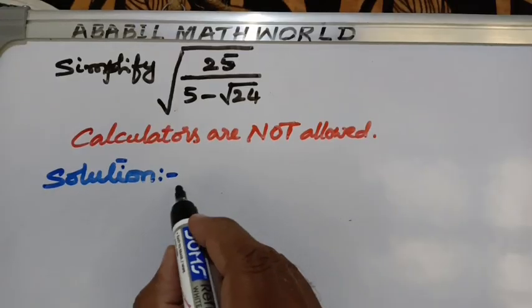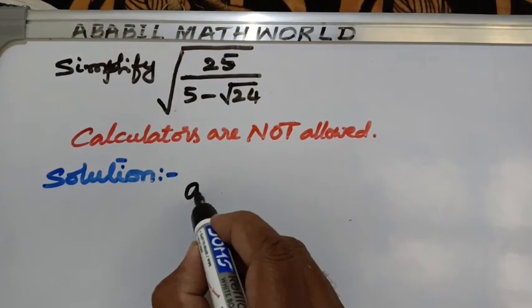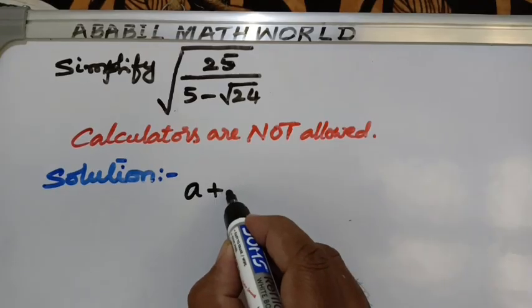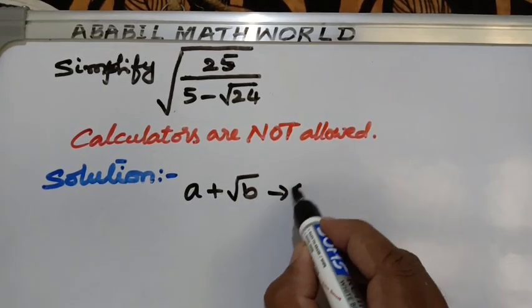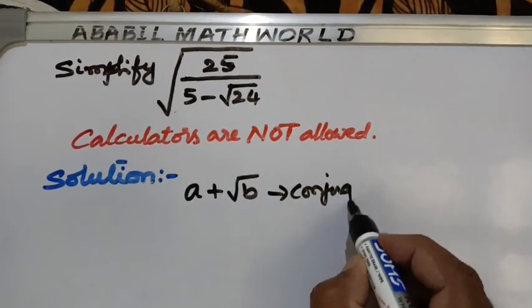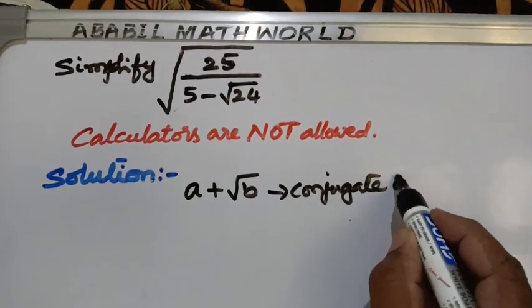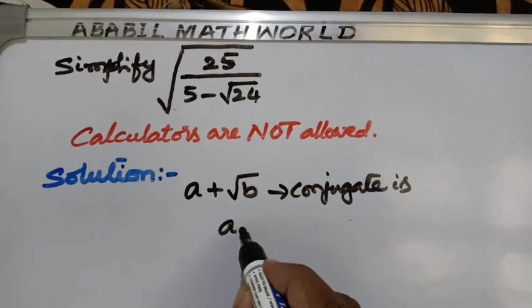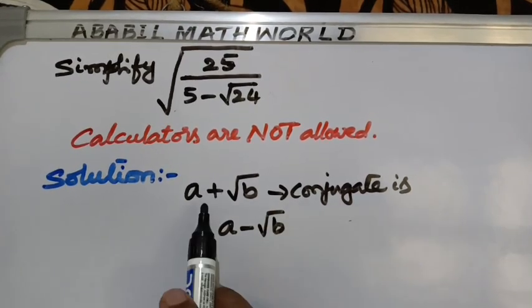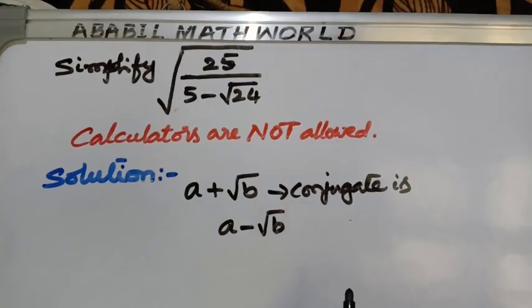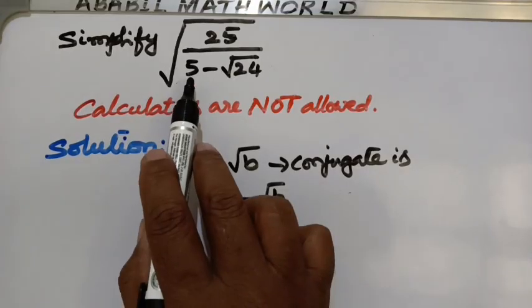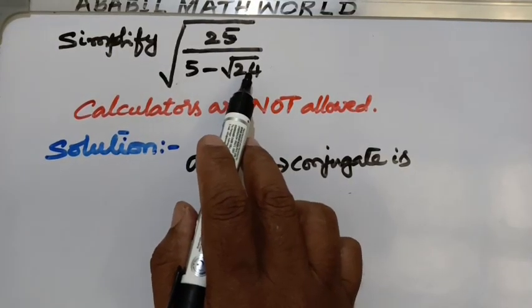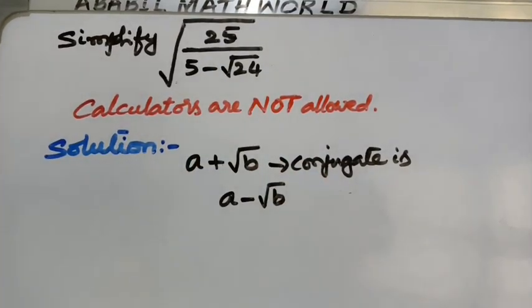So for this problem, first we can see here that whenever a term of the type A plus root B is given, then its conjugate is of the type A minus root B. So A plus root B, its conjugate is A minus root B.